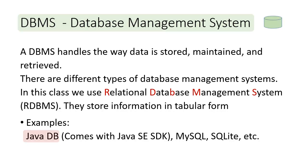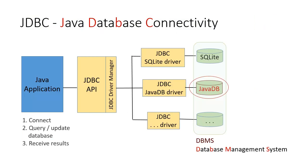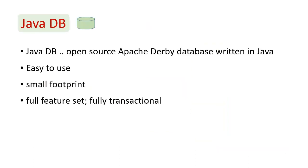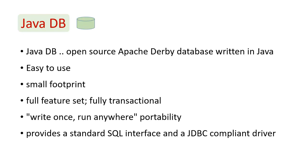Now we are going to have a closer look at JavaDB. JavaDB is an open source Apache Derby database written in Java. It is easy to use. It has a small footprint, which means it doesn't require a lot of memory. It has a full feature set and is fully transactional. It also has write-once, run-anywhere portability, and it provides a standard SQL interface and a JDBC-compliant driver.